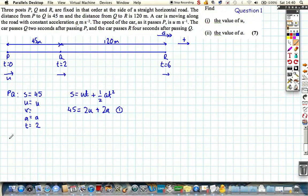If we consider the journey from P all the way to R, that might help us. See what we've got here, we know the total distance is 165, adding 45 and 120 together. Again, we know the initial velocity at P, we can just call that u. We don't know its final velocity, the acceleration is a, we want to find, and the time it took to get all that distance is 6.